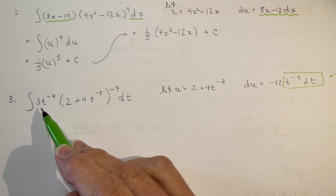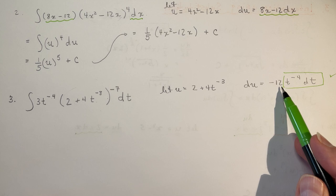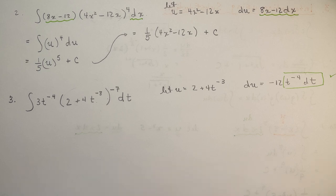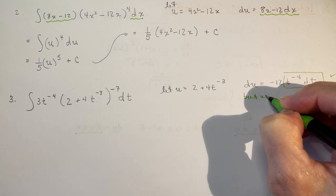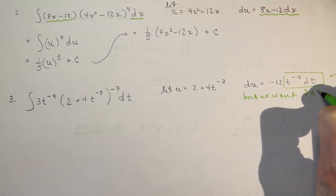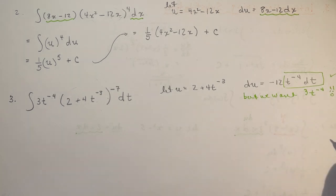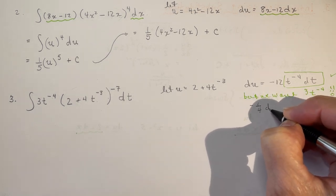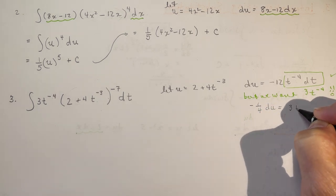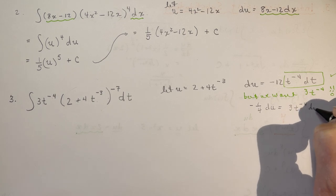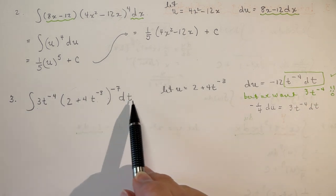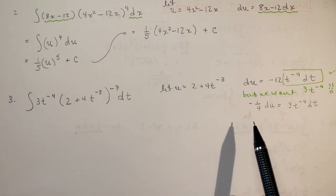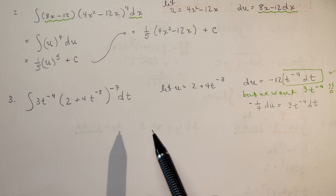So, how am I going to get 3t to the minus 4 from minus 12? Well, that's just minus 1 quarter times that. So, if I do, I'm just going to write a little note here. But we want 3t to the minus 4. So, all that means is that if we divide by minus 1 quarter du, that's going to be equal to 3t to the minus 4 dt. So now we have 3t to the minus 4 dt. We have minus 1 quarter du. And we're going to use that little rule that I said about an integral of a constant times a function is a constant times the integral of the function.